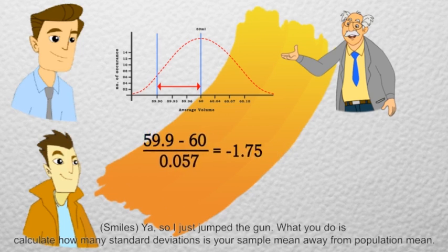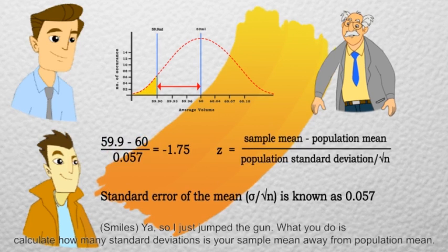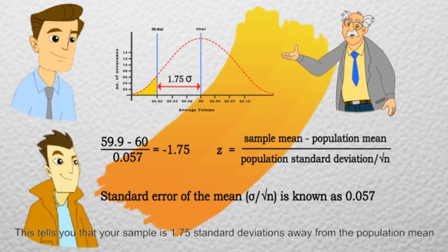What you do is calculate how many standard deviations is your sample mean away from the population mean. This is done by subtracting 60 ml from your sample's mean and then divide it by standard deviation. This tells you that your sample is 1.75 standard deviations away from the population mean.